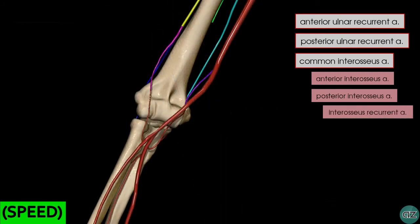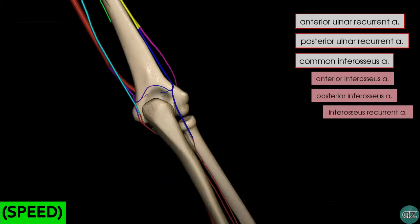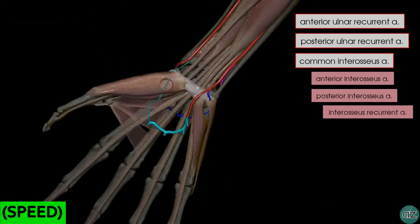So we've taken a good look at the rich anastomotic network formed around the elbow joint, and we've looked at the proximal branches of the radial and ulnar arteries that contribute to this, as well as the branches of the brachial artery. In the next tutorial we'll take a look at the distal branches of the radial and ulnar arteries and the blood supply to the hand and the wrist.